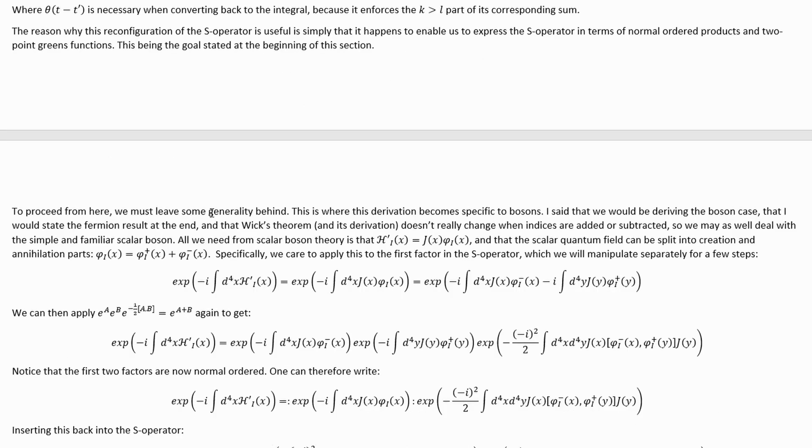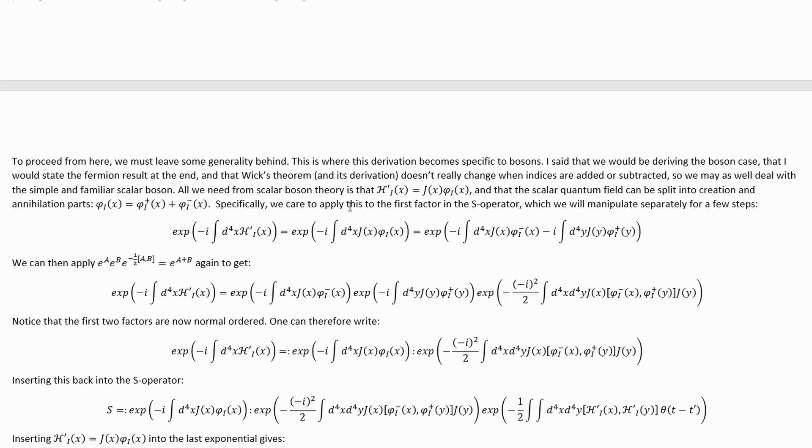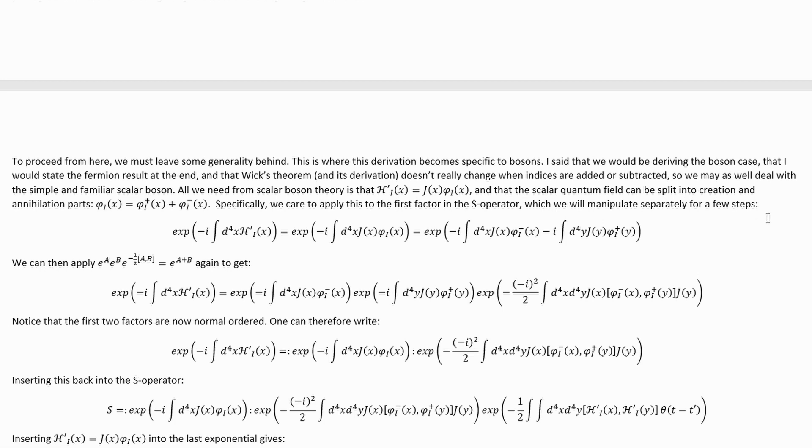To proceed from here, we must leave some generality behind. This is where this derivation becomes specific to bosons. I said that we would be deriving the boson case, that I would state the fermion result at the end, and that Wick's theorem and its derivation doesn't really change much when indices are added or subtracted, so we may as well deal with the simple and familiar case of scalar bosons. All we need from scalar boson theory is this, this interacting Hamiltonian, and that the scalar quantum field can be split into creation and annihilation parts like this. Specifically, we care to apply this to the first factor in the S operator, which we will now manipulate separately for a few steps.